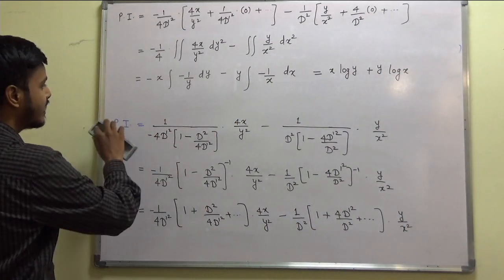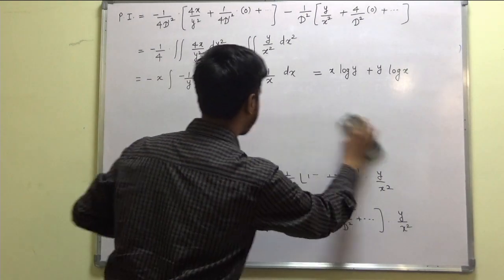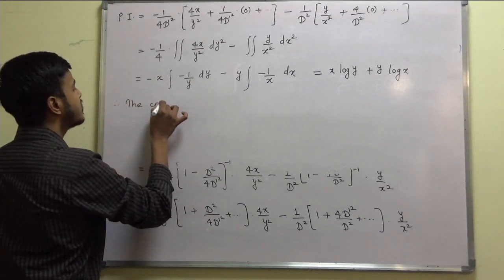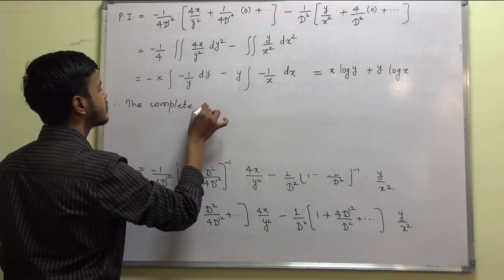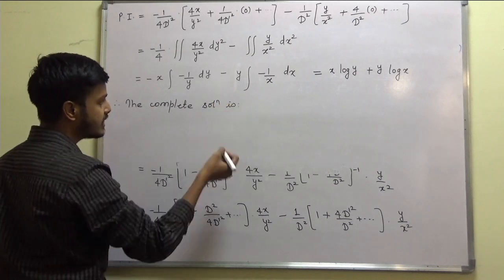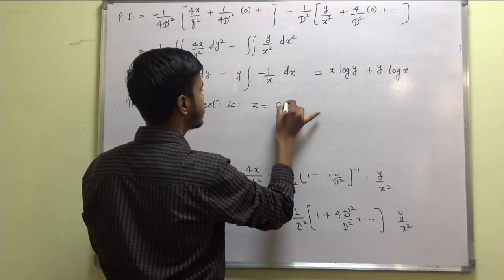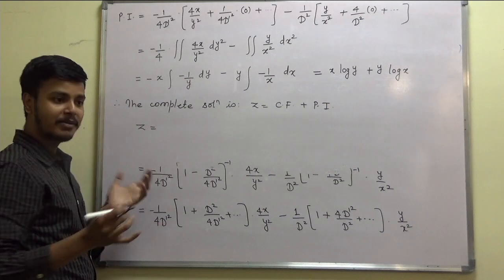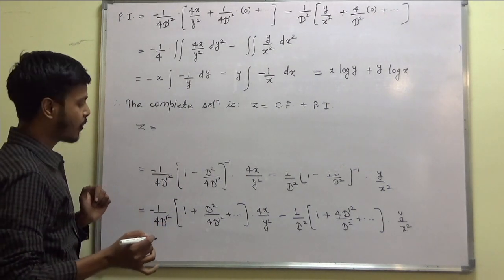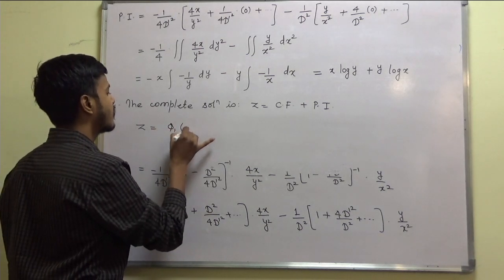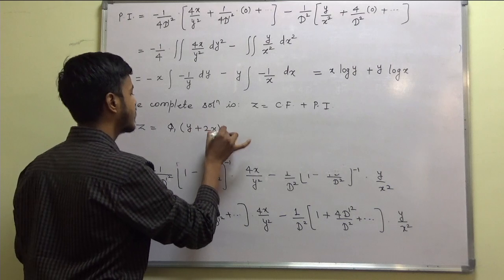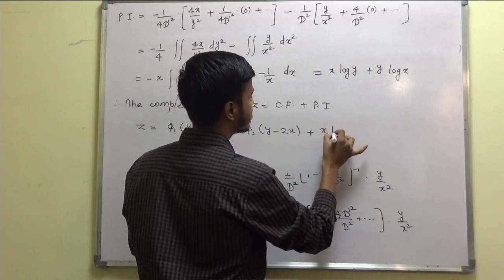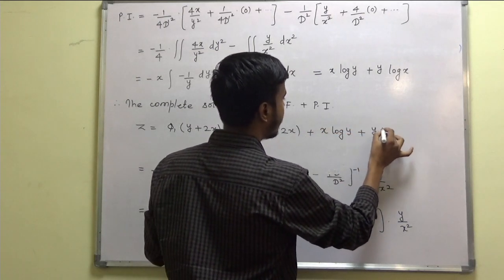Once you get this, you just need to write down the general solution. The complete or general solution is z = CF + PI. The CF is φ₁(y + 2x) + φ₂(y − 2x), and the PI is x·log(y) + y·log(x).